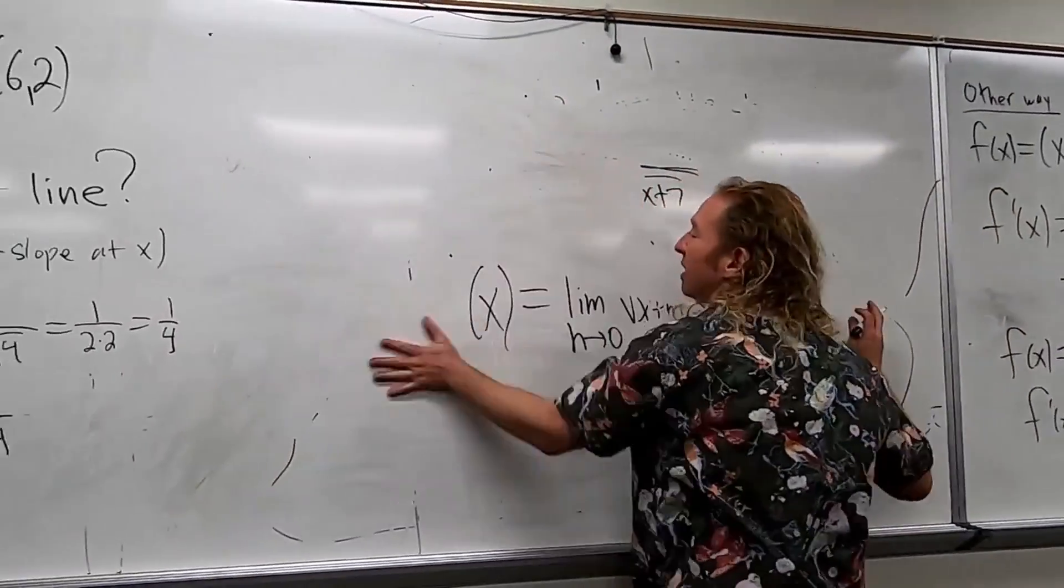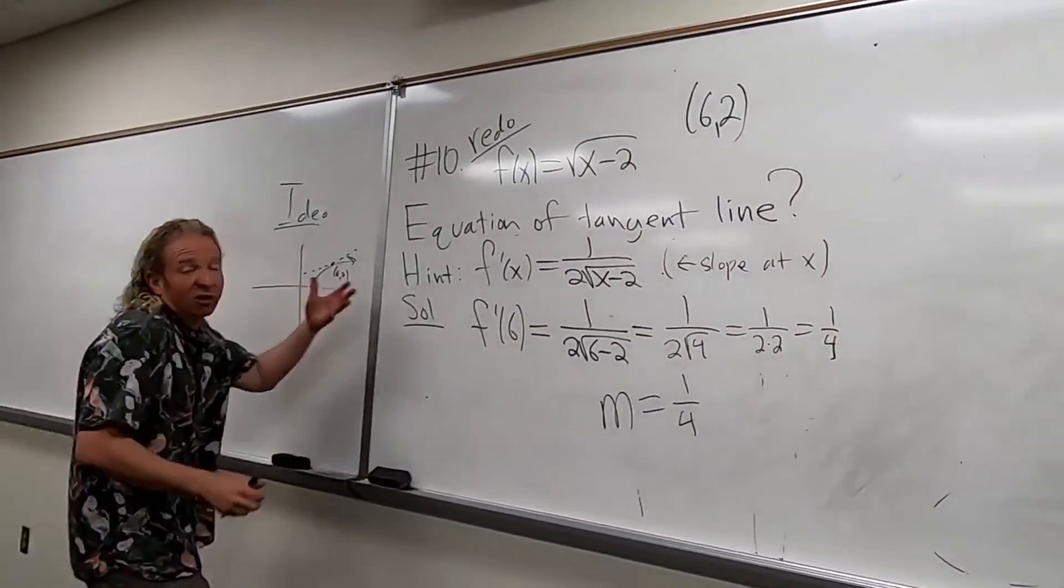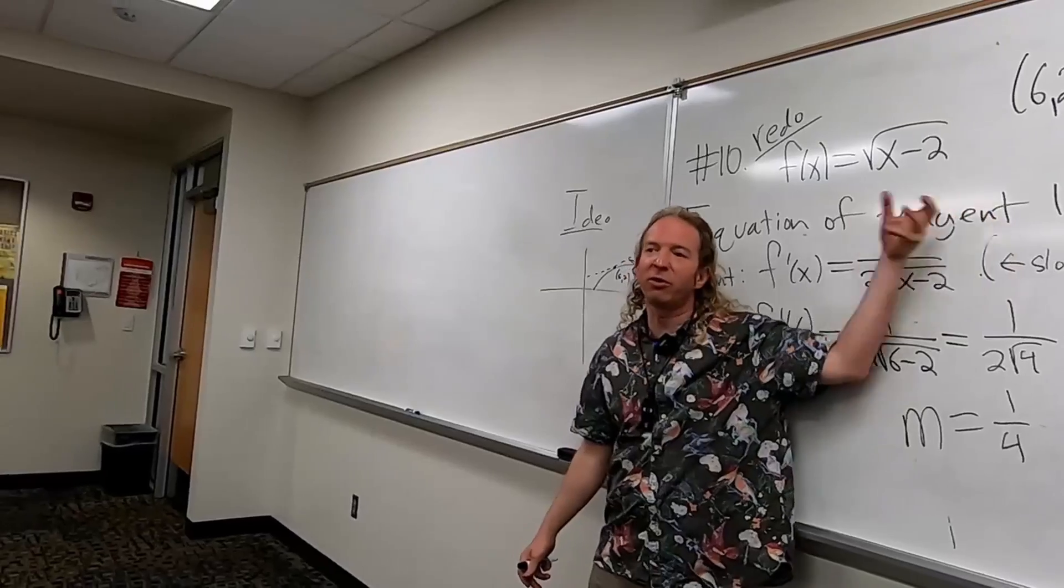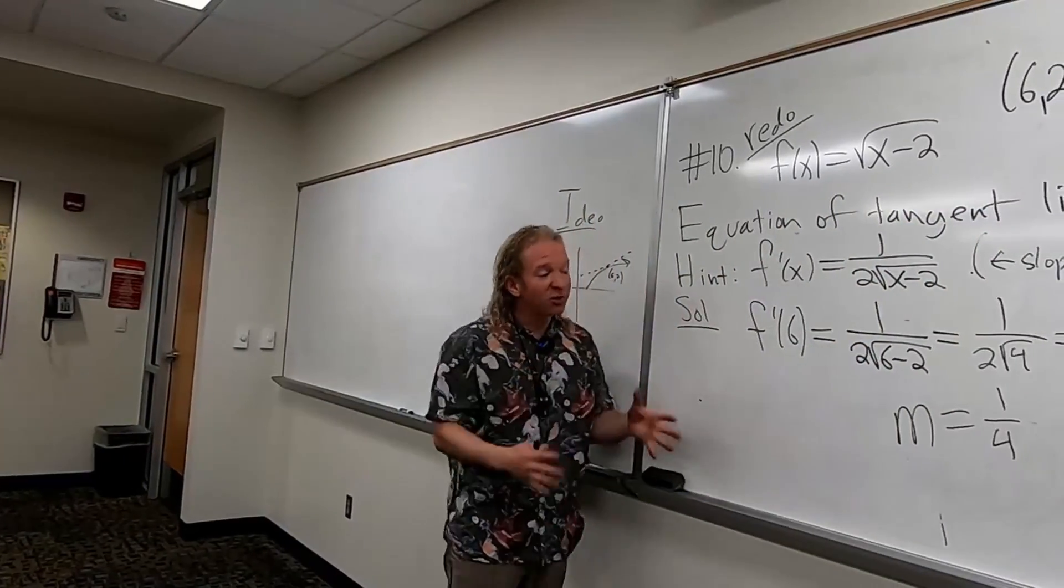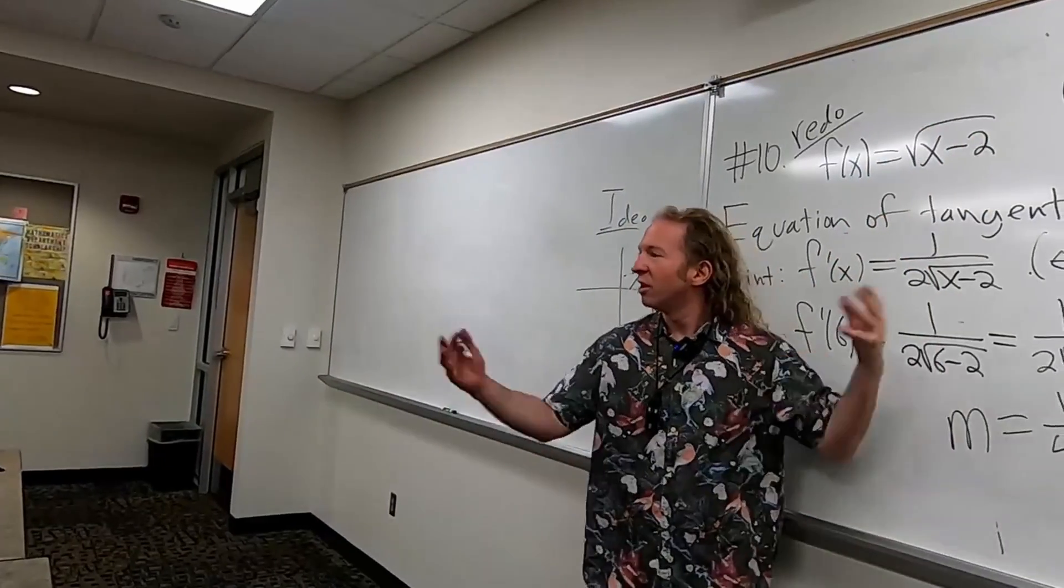Okay, so main idea, right, is that the derivative is the slope of the function, or just the slope of the tangent line. So now that you have the slope of the tangent line, you have a point and a slope, you just use this formula.